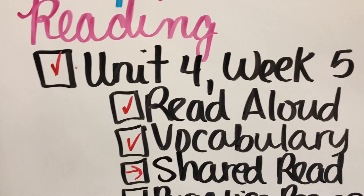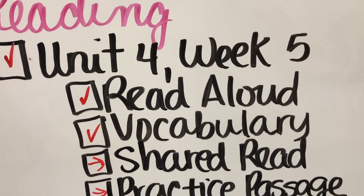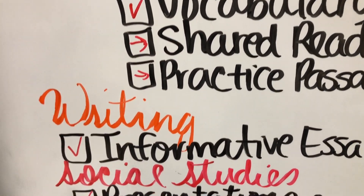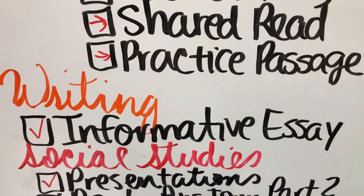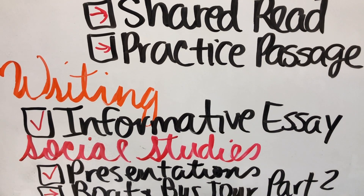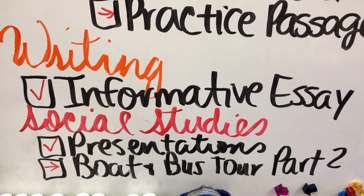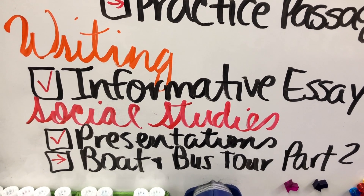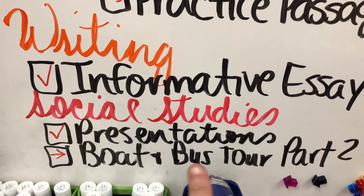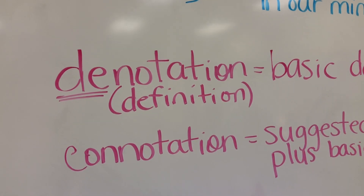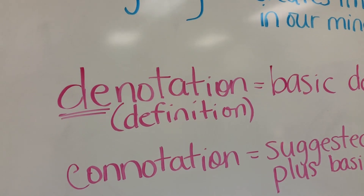That was really cool and the students enjoyed it. Then it was time for reading, continuing with our unit for week five, the poetry unit. We did the read aloud, went over vocabulary, and then ran out of time because I really wanted to focus on the informative essay. After that, I had two students present their White House projects that weren't able to present earlier this week. In reading we were going over imagery, denotation, and connotation — those were some of our vocabulary words.